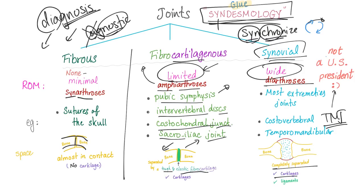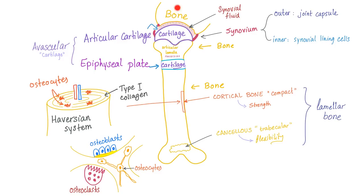Synovial joints have completely separated bones with cartilage and ligaments. The type of cartilage at the articular surface is hyaline cartilage. The articular surface has cancellous bone, while the shaft has cortical bone for strength. The articular surface has type 1 collagen, osteocytes, and blood vessels. Here we also have the hyaline articular cartilage and the epiphyseal cartilage plate.